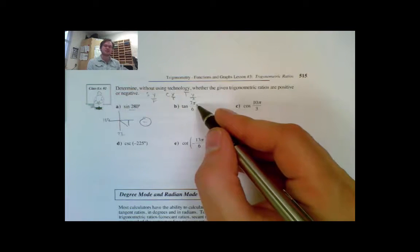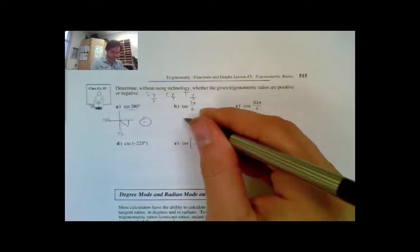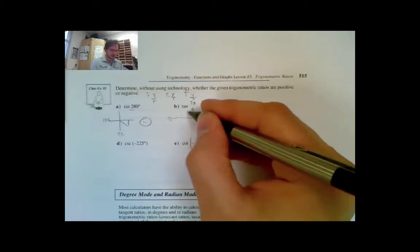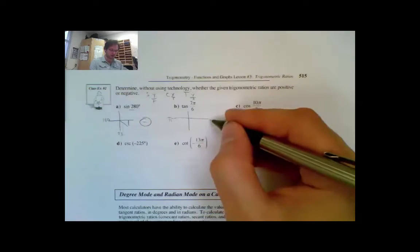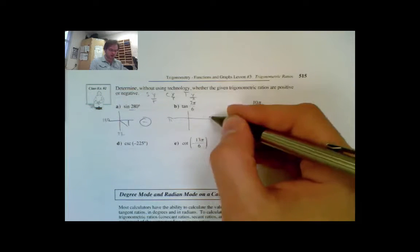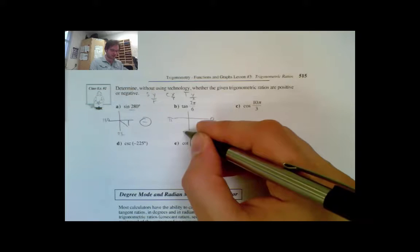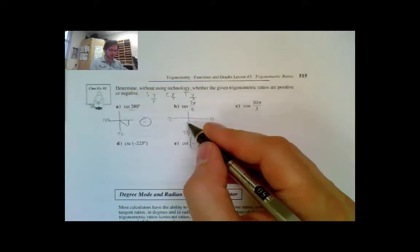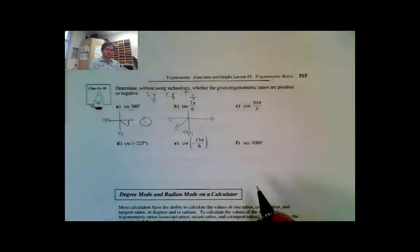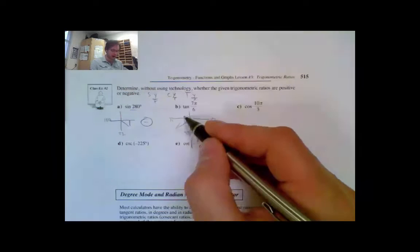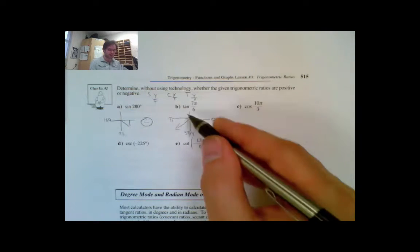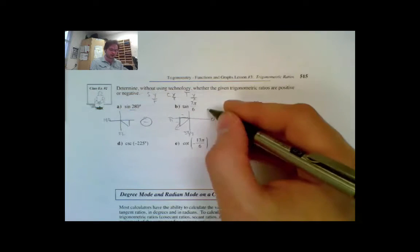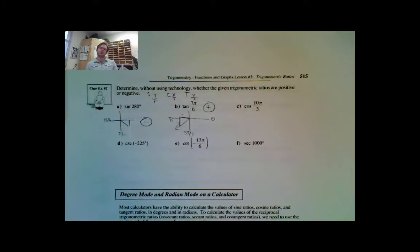Now we're looking at tan 7π/6. So I want tan 7π/6. Drawing this out: 0π here, π/2 here, π here, 3π/2 here. So 7π/6 is going to be somewhere in quadrant 3. For tangent (TICKS), both my x and my y are negative in quadrant 3. Negative divided by negative gives a positive ratio, so tan 7π/6 is positive.